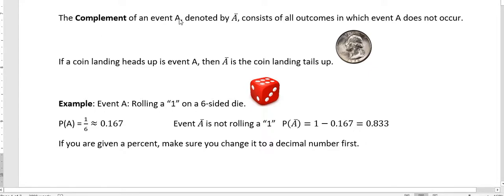So if we have event A, the complement is denoted by A bar, the bar above that, and so that consists of all the outcomes in which event A does not occur.